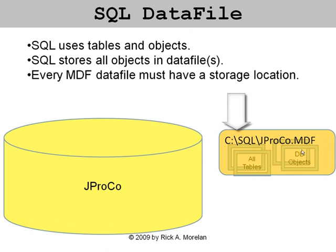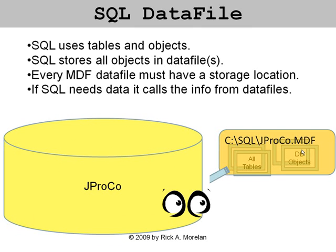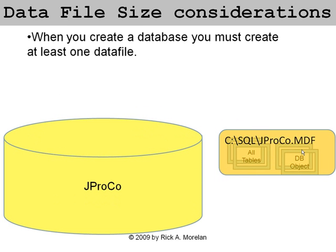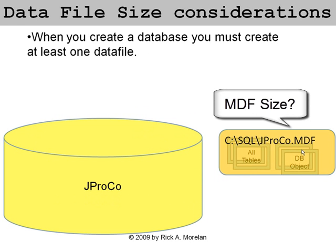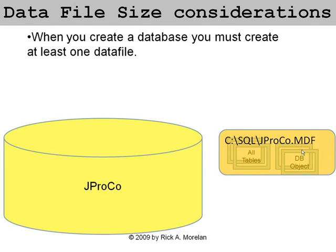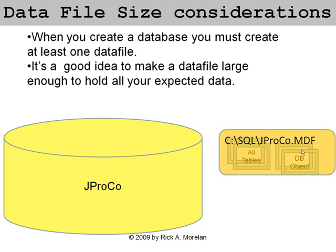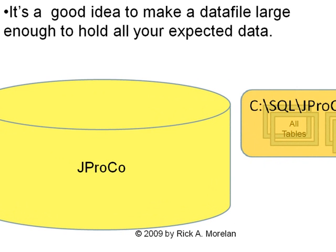Every MDF file must have a storage location. In the example here, it was the C drive's SQL folder, and the name of the main data file was jproco.mdf. So if the SQL server needs some data, it looks at the main data file to get all of its objects and data. When you create a database, you need at least one data file. It's a good idea to make sure that data file is large enough, even when the database starts out empty — like the grand opening of a mall with a big parking lot anticipating future traffic. If the database is going to take up about 5 gigs, make a 5-gig MDF in anticipation. Make a data file large enough to hold your expected data.